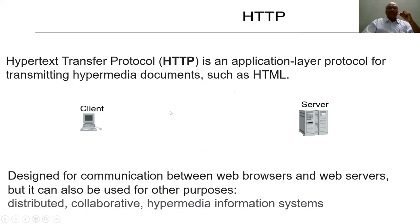Basically, when you are trying to exchange information such as hypermedia documents — where a document contains hypertext, where the text is related to a link to another document, or text indicating some multimedia data — such documents we usually call hypermedia documents. Whenever we try to retrieve information between client and server, we exchange those hypermedia documents with the help of HTTP. In its initial stages, HTTP was designed for communication between web browsers and web servers.